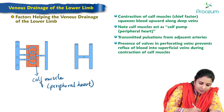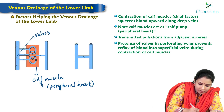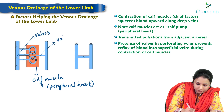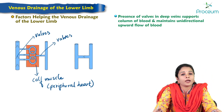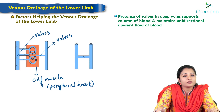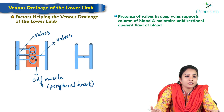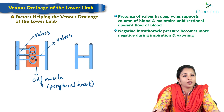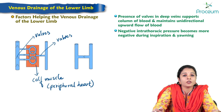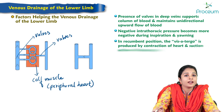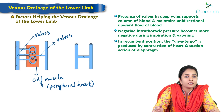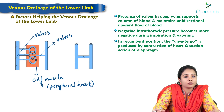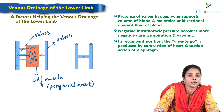We can see the valves in the perforating veins, which prevent regurgitation of blood back into the superficial veins. Another factor that increases venous return from the lower limb is negative intrathoracic pressure, which becomes more negative during inspiration and yawning. In the recumbent position, vis-a-tergo is produced by the contraction of the heart and suction action of the diaphragm, also increasing venous return.